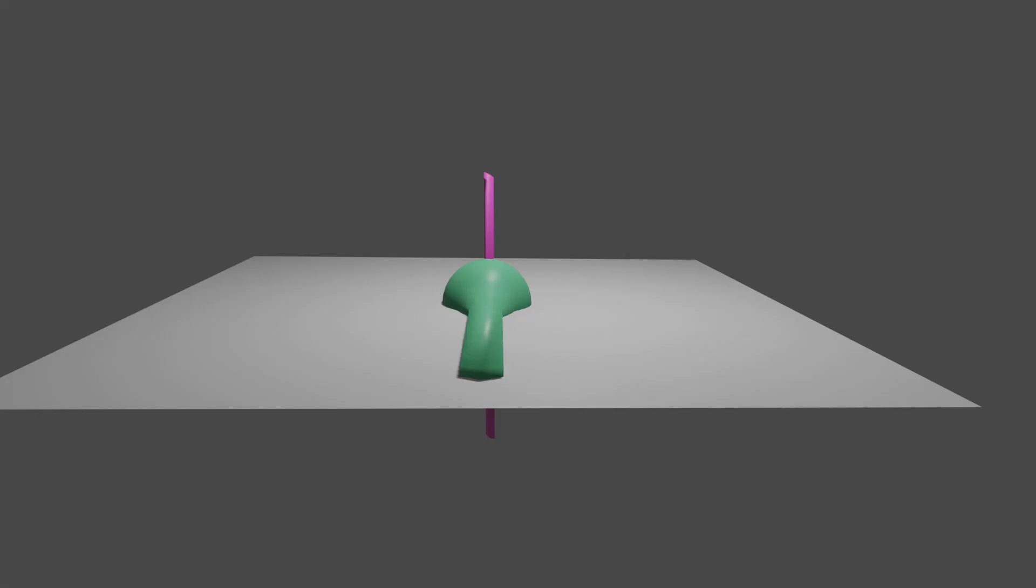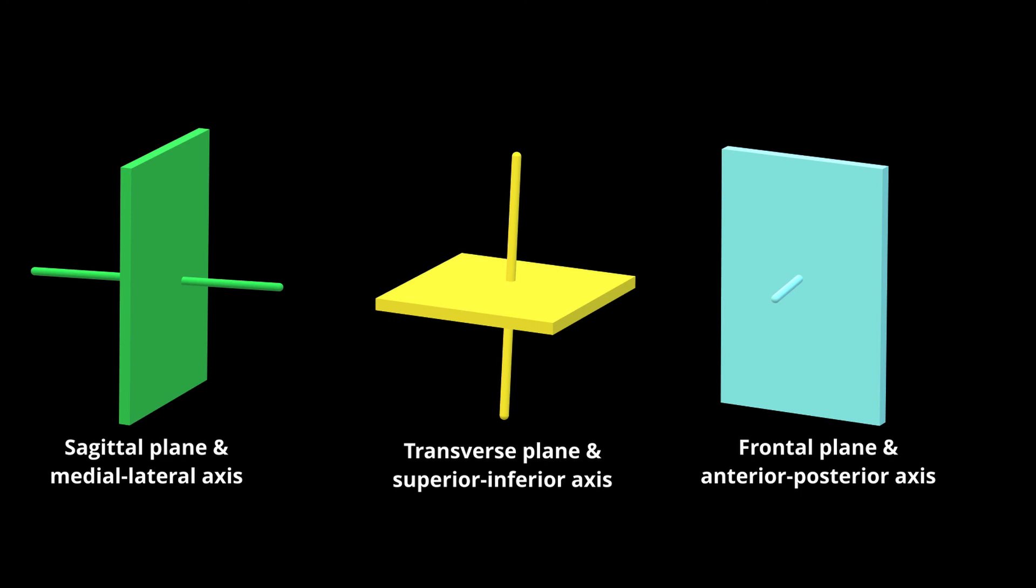So when we describe motion, we describe motion occurring within a plane around a particular axis. So motion that occurs in the sagittal plane occurs around the medial lateral axis, the transverse plane around the superior-inferior axis, and the frontal plane around the anterior-posterior axis.